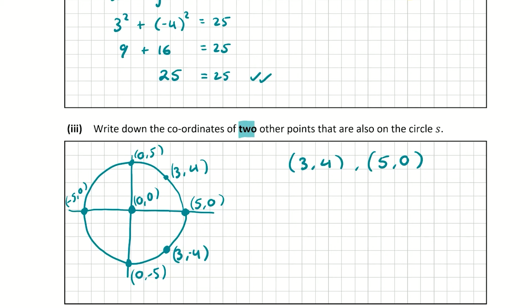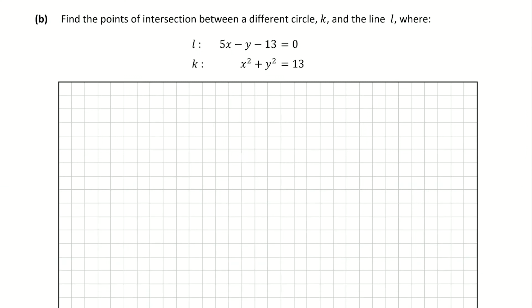You're going to get 5 marks for writing down two points that are on circle S. Now in question b we're told to find the points of intersection between a different circle K and the line L, where L: 5x - y - 13 = 0 and K: x² + y² = 13. When given two equations and asked to find the point of intersection, you want to substitute one equation into the other.